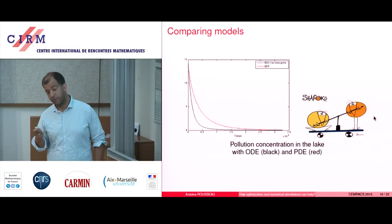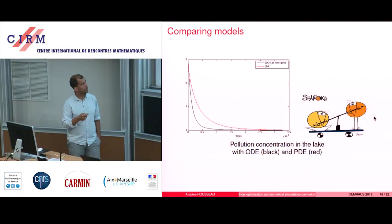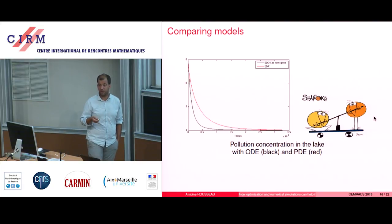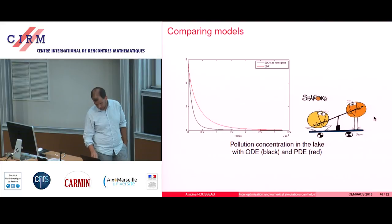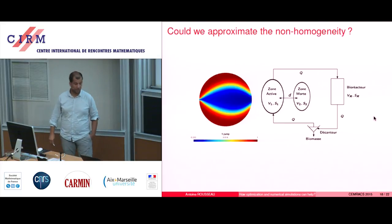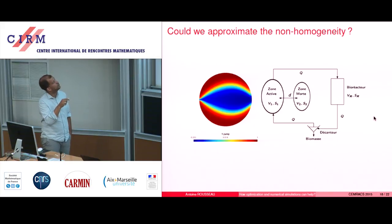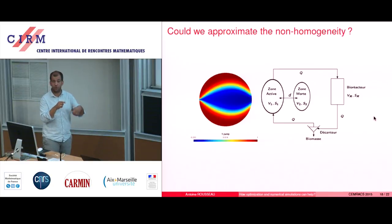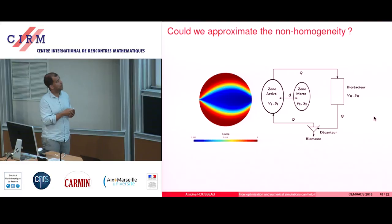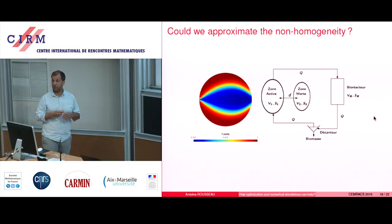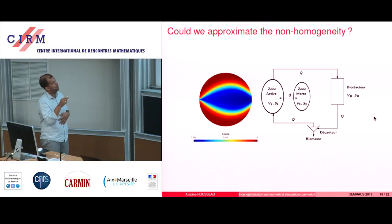So that means that at least the ODE model is not satisfying. Maybe the PDE model is not either. But we're back to ODE. And that is based on the fact that in this specific configuration, you can see that there is what Alain called an active zone in the middle where the depollution is really accurate, and a dead zone on the borders where nothing happens — nothing except the diffusion process that will make the blue reach the bottom and top of the lake, but after a long time.